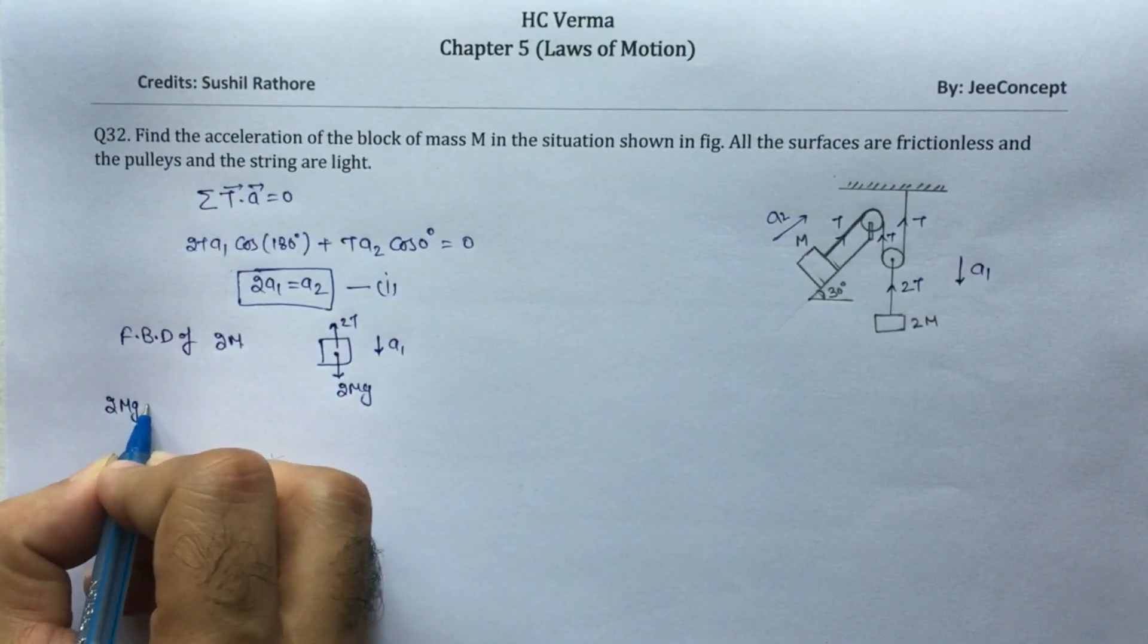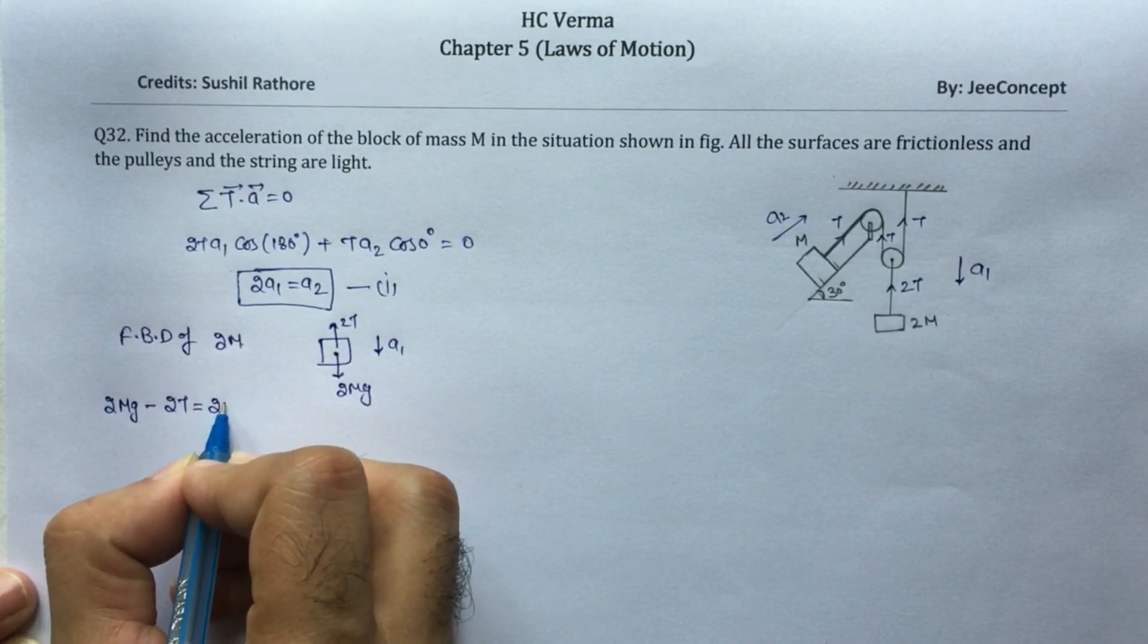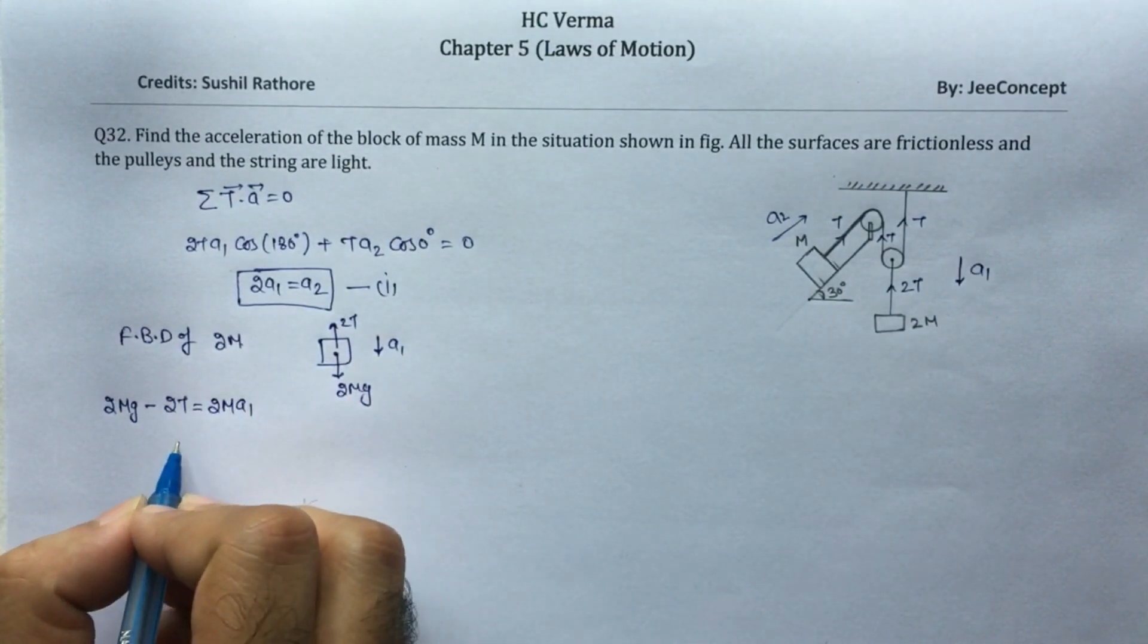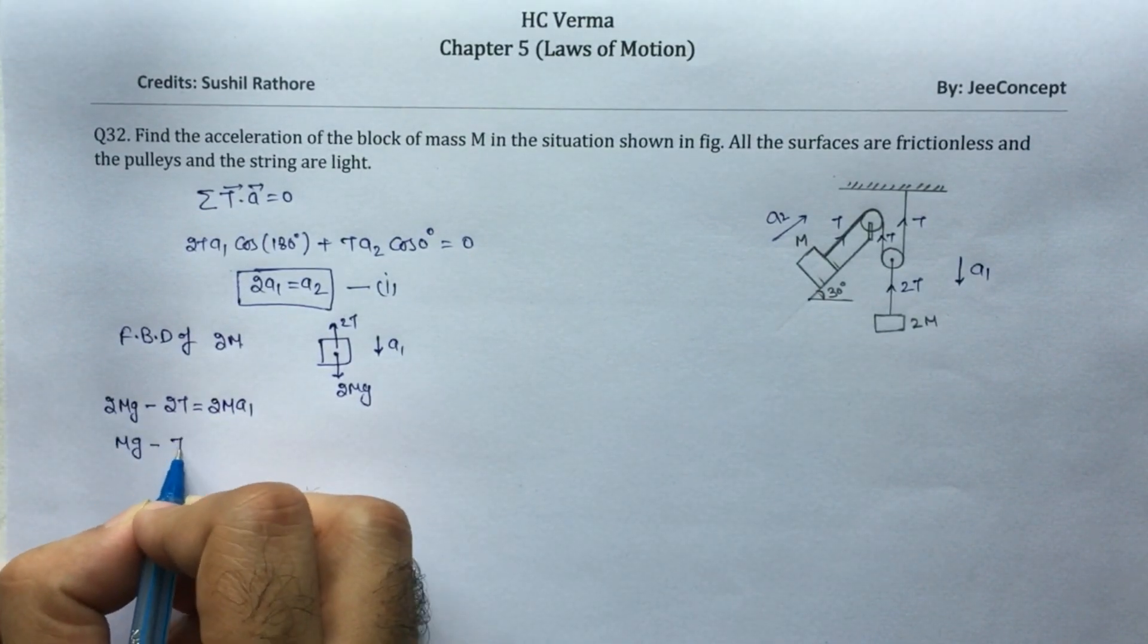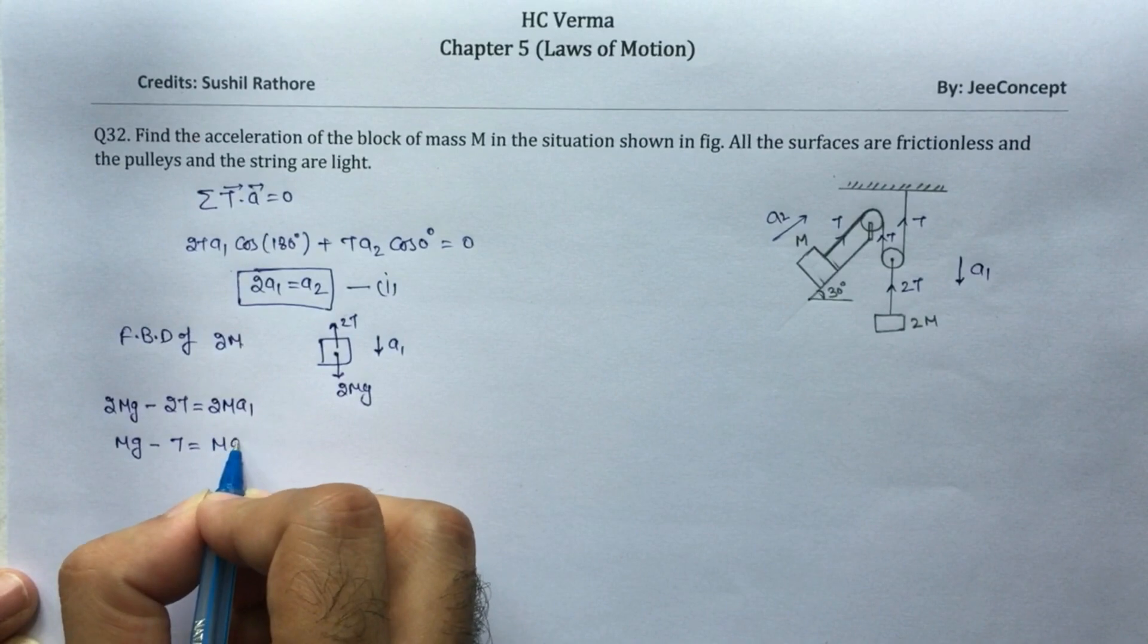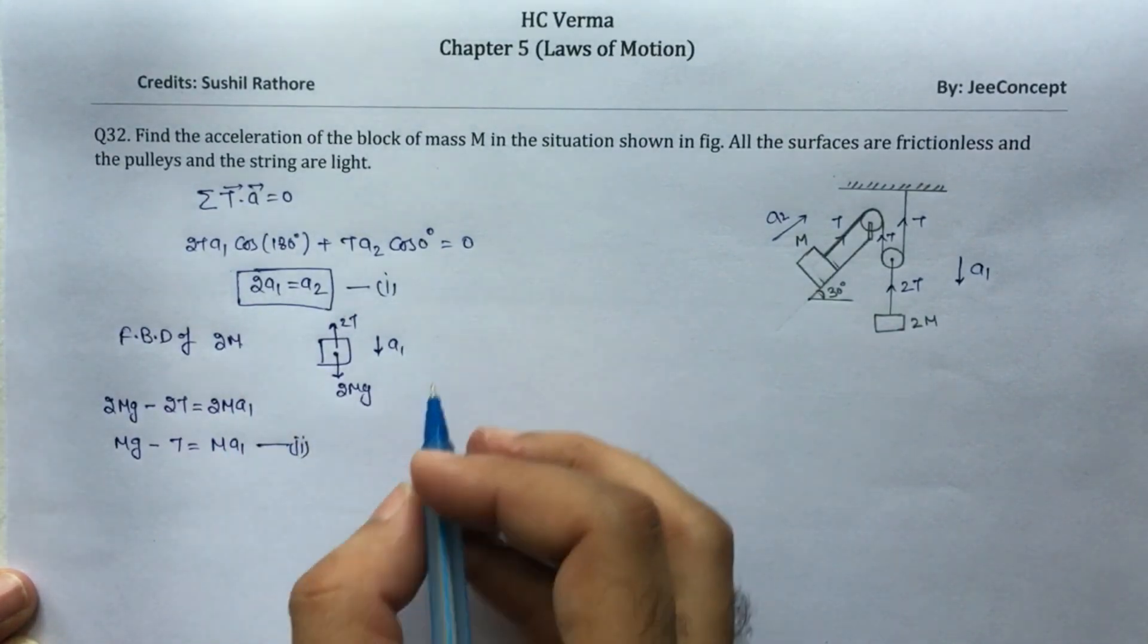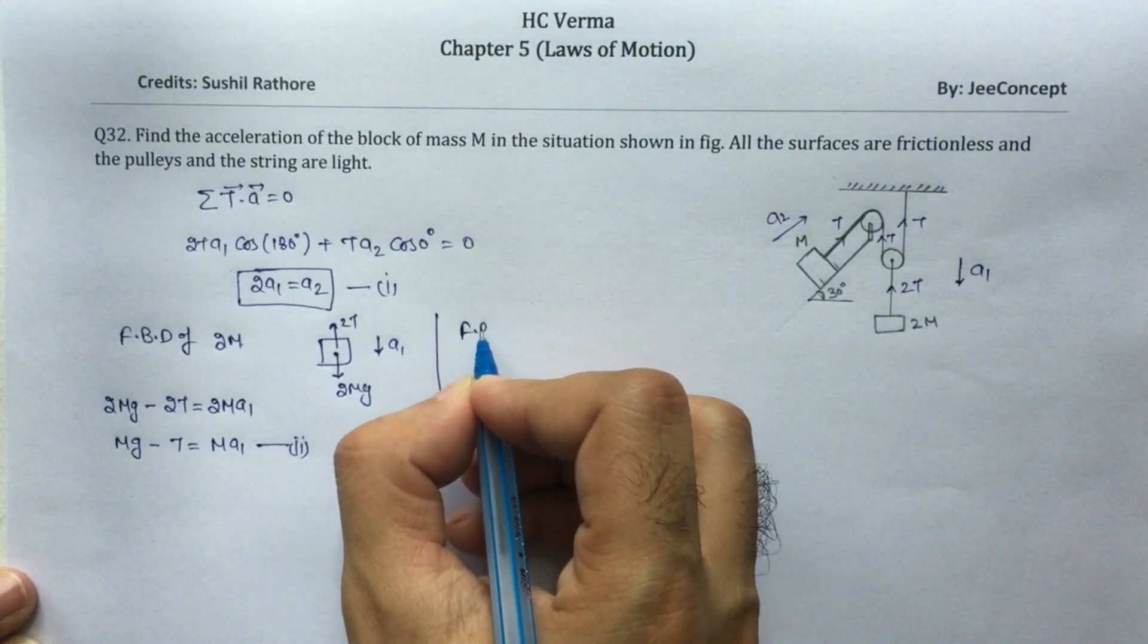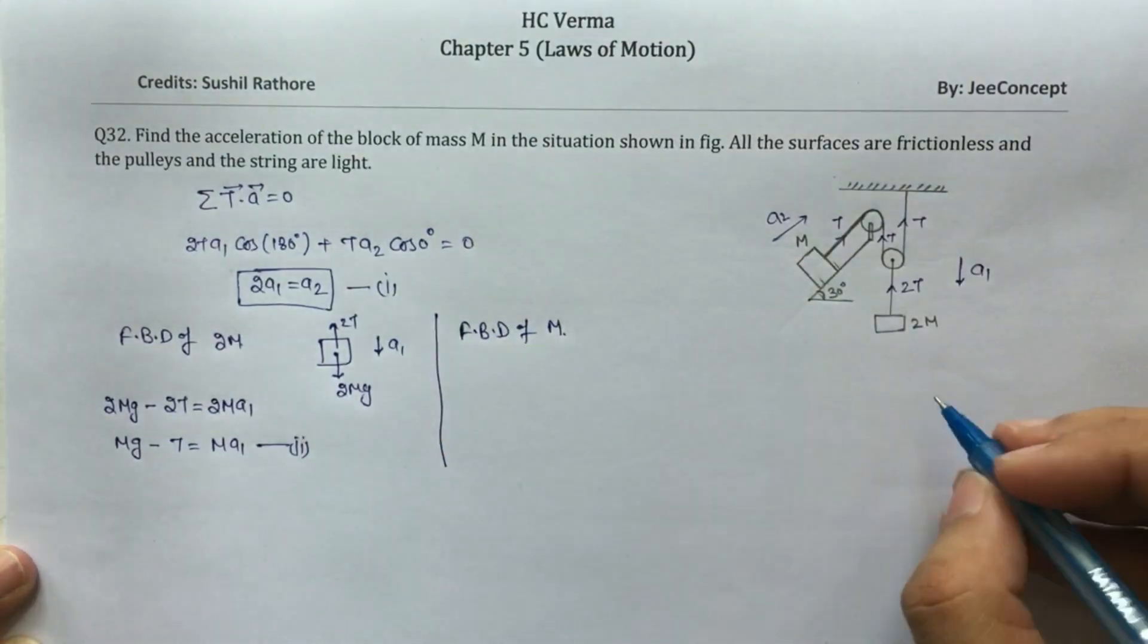2 will be common and cancel out, so this will become mg minus T equals m times a1. Say this is equation number 2.